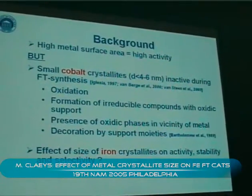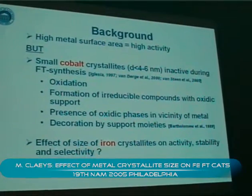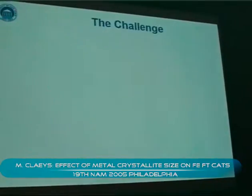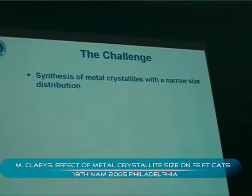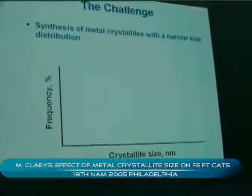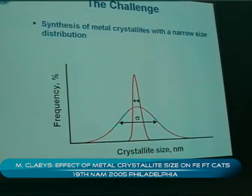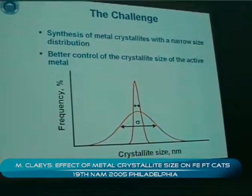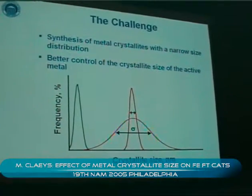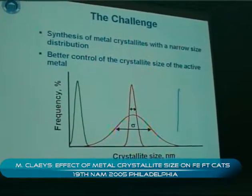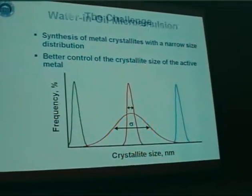In this study we want to focus on iron crystallites and their activity, stability, and selectivity in Fischer-Tropsch synthesis. The big challenge is that we need a number of good model catalysts with narrow crystallite size distributions, and we want to be able to control and tune the average crystallite size — ultimately having a large range of model catalysts with different average crystallite sizes.